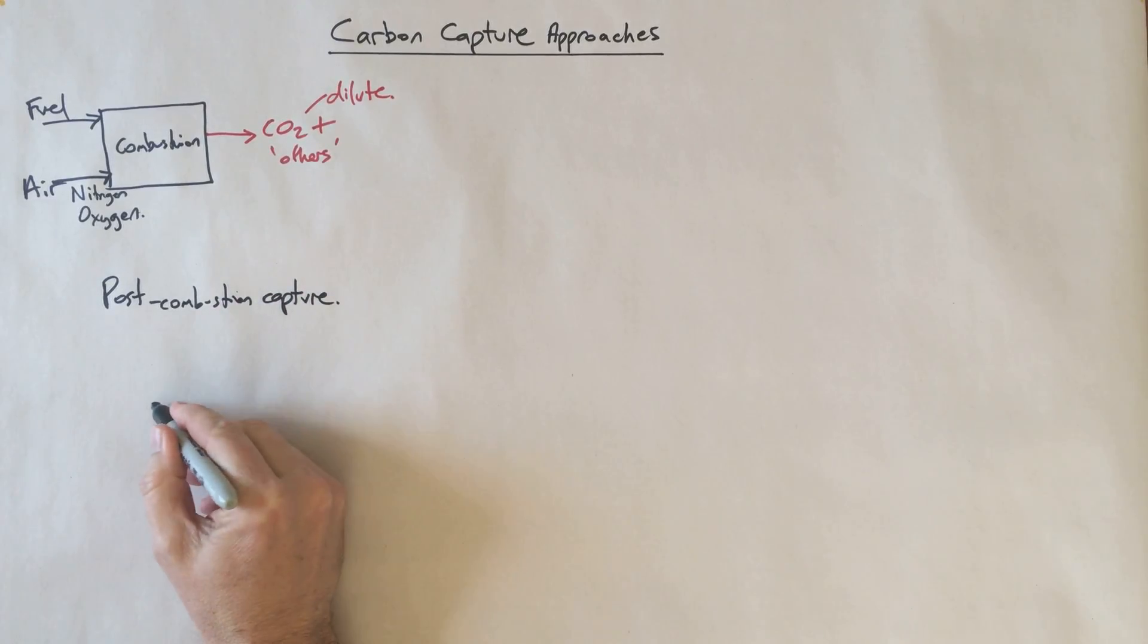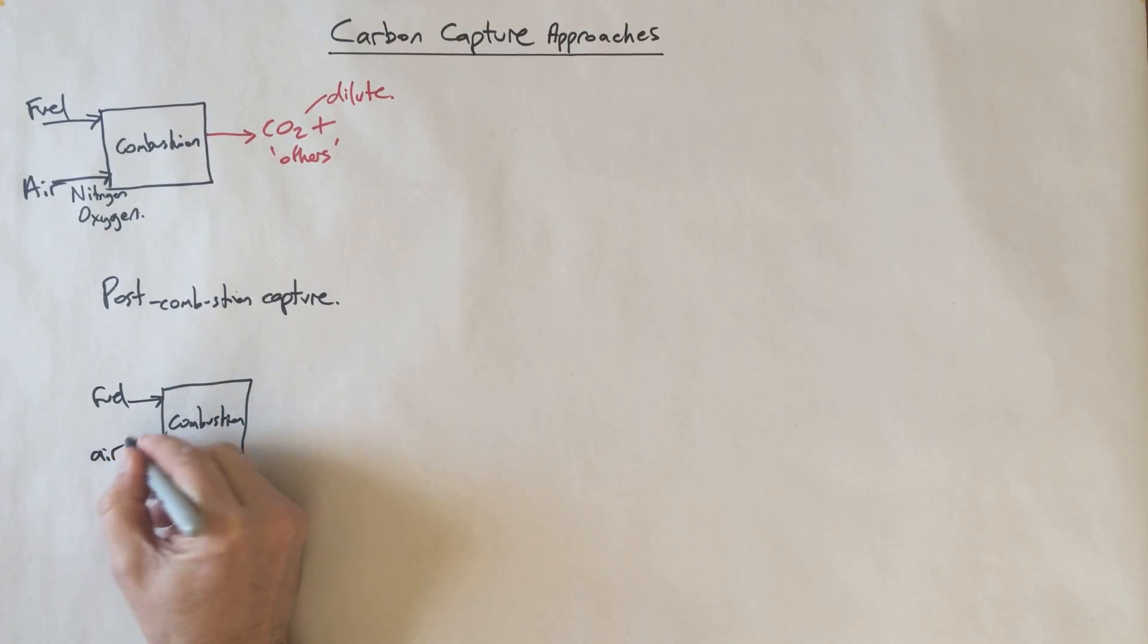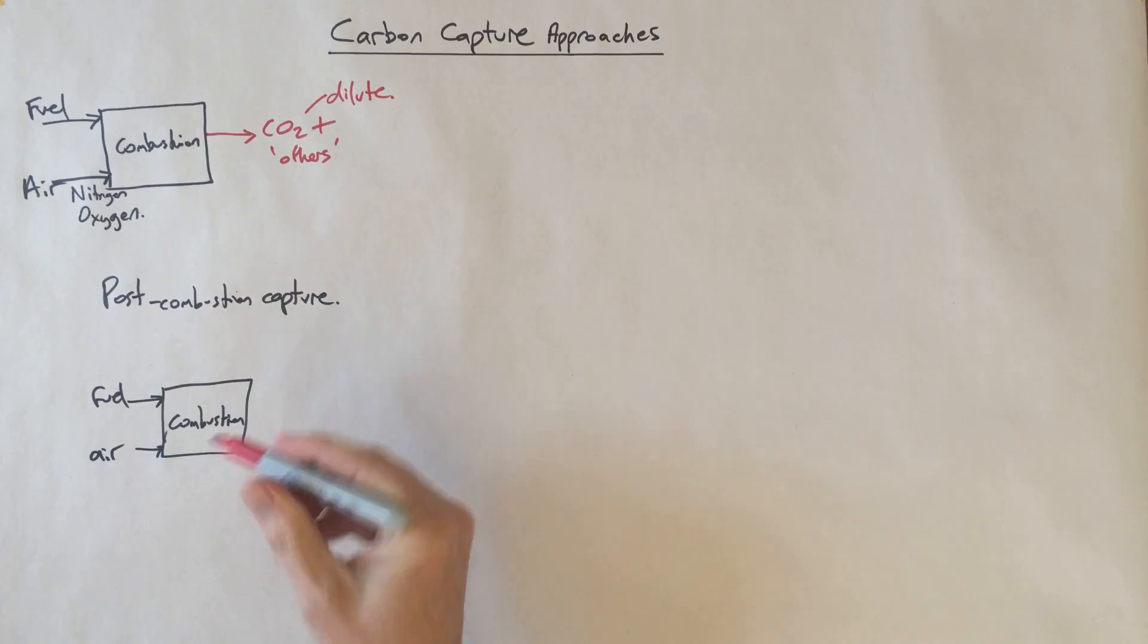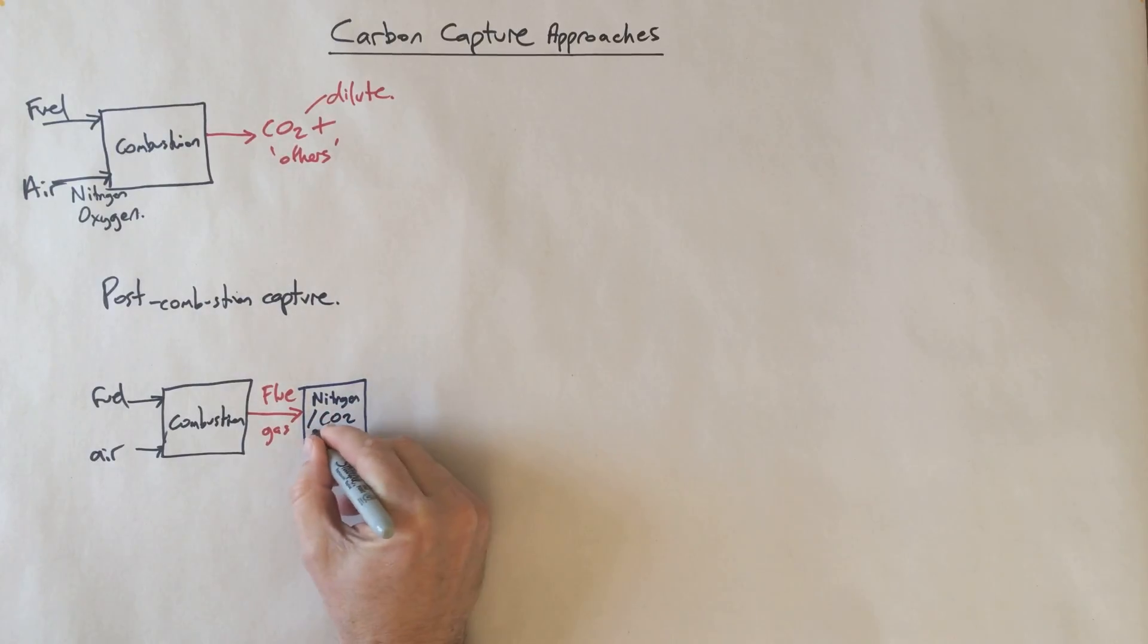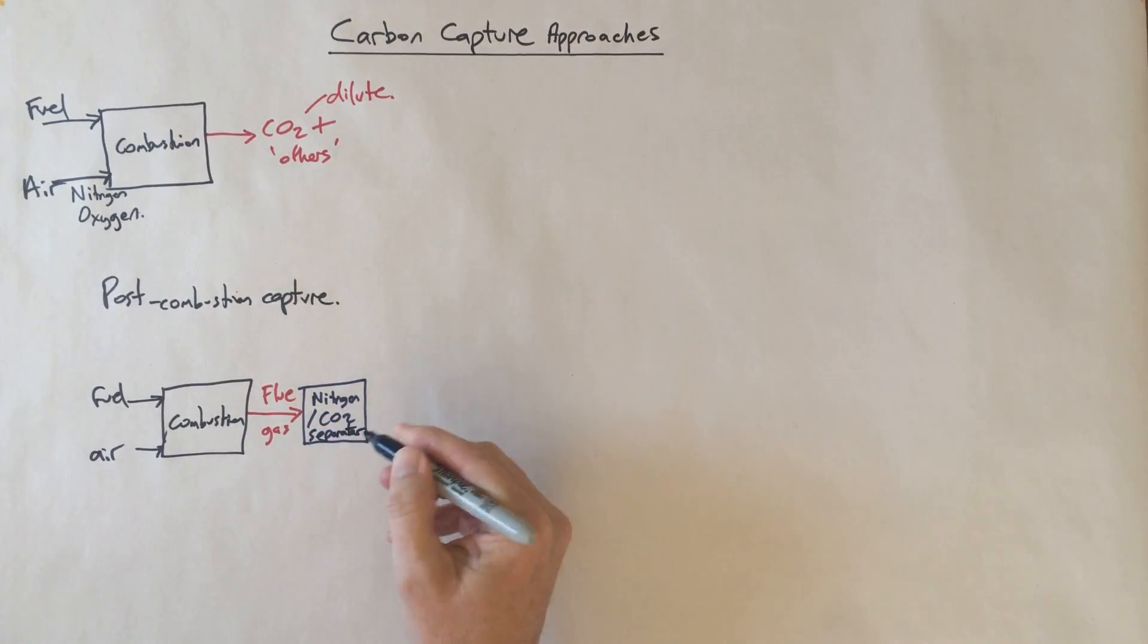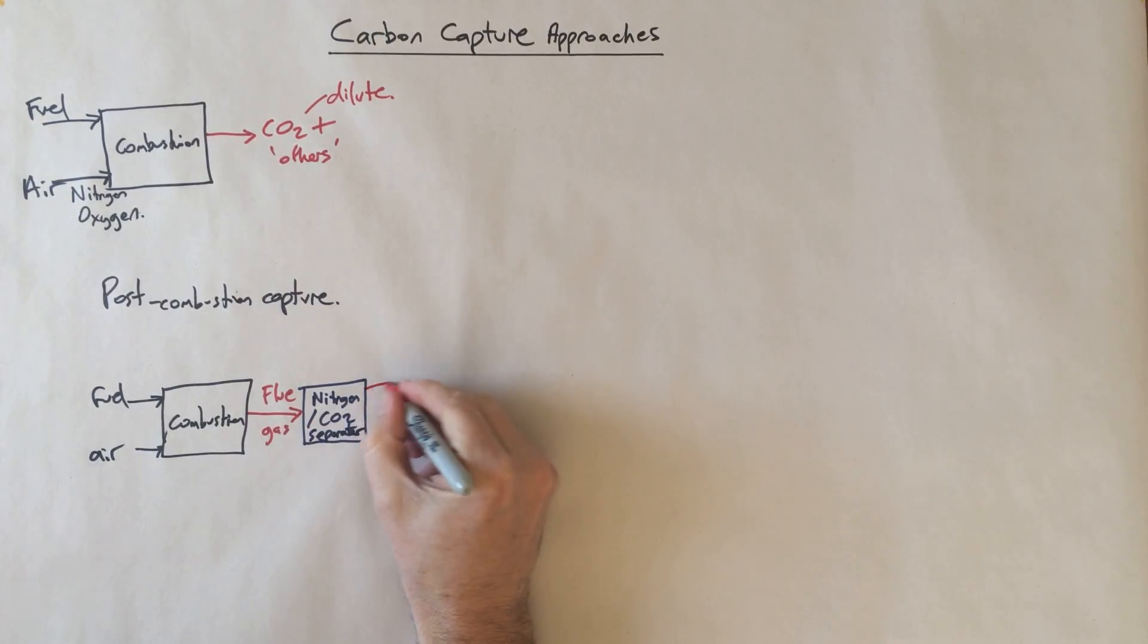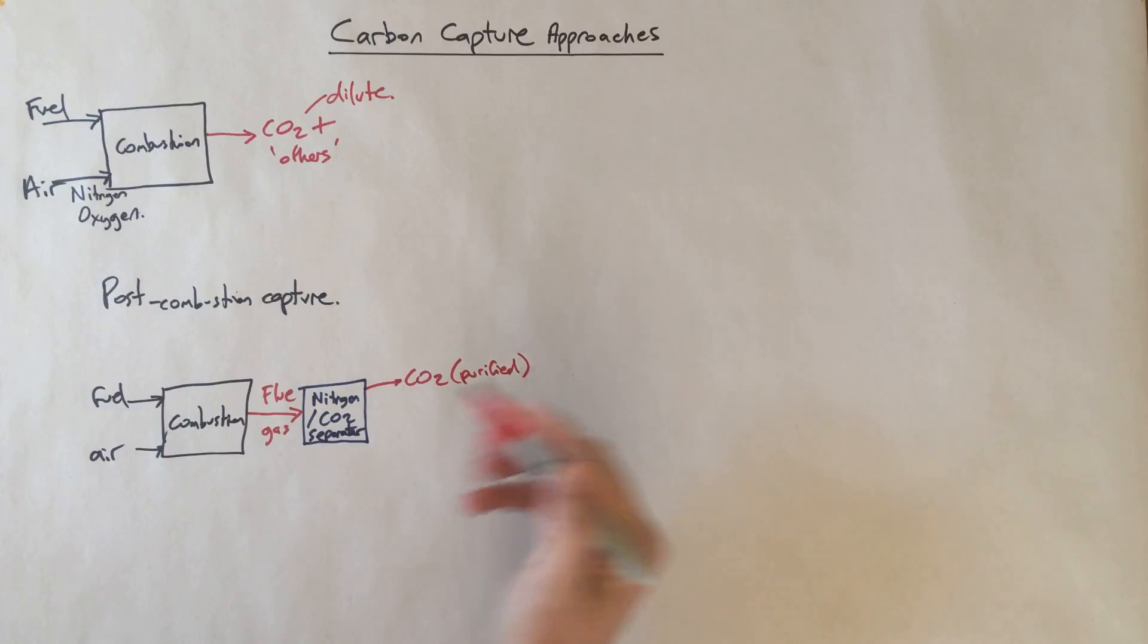The first one sounds pretty obvious. This is something known as post-combustion capture. Its name kind of gives it away. I've got some kind of combustion process - could be a power station - with some fuel and air going in. Out of this I get my flue gas. What I do is I run a gas separation plant, and what it does is it's predominantly a nitrogen and CO2 separator.